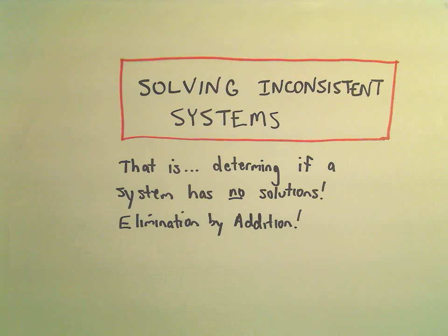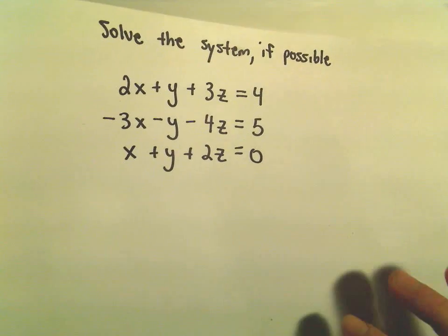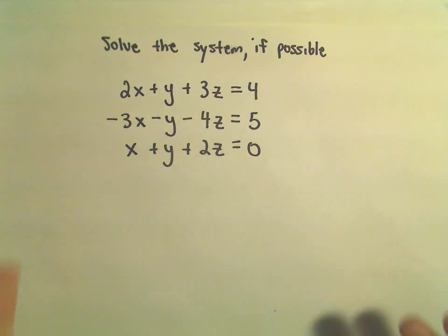Alright, so another example here of solving an inconsistent system. And again, what we're trying to do is just determine if a system of linear equations has no solutions or not. We're using elimination by addition in these examples. So we're going to try to solve this system if possible, if a solution exists.